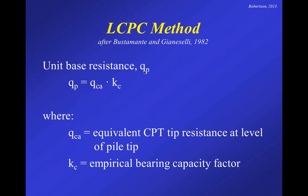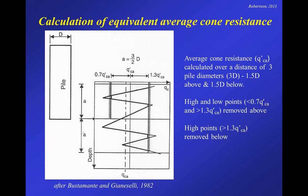For the LCPC method, the unit base resistance is relatively simple. There's an equivalent CPT tip resistance at the level of the pile tip — an average cone resistance at the pile tip — multiplied by an empirical bearing capacity factor that's a function of the pile type and ground conditions. For the averaging, they suggest calculating the average cone resistance over three pile diameters — essentially one and a half pile diameters above and one and a half pile diameters below the pile tip. That gives you the initial average cone resistance.